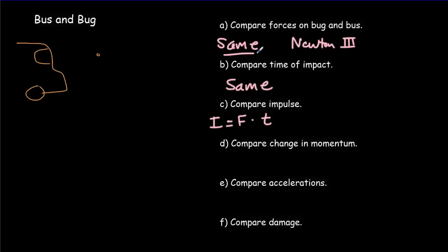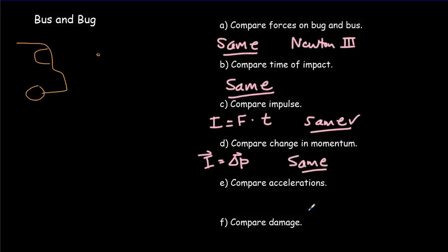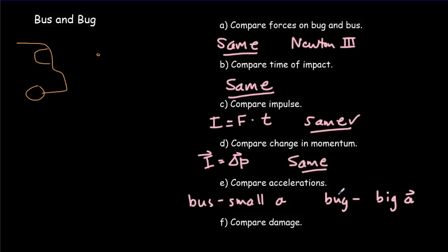The bus hardly changes its velocity but has a very big mass to make up for it. The bug changes its velocity a lot — it turns right around bouncing off the windshield — but it only has a tiny mass. The bus has a small acceleration; the bug has a big acceleration. And of course, the one that goes through that really big acceleration is the one that's damaged more — that would be the bug.